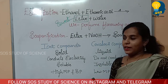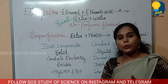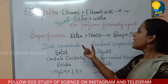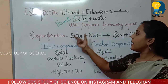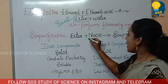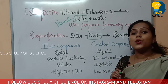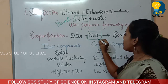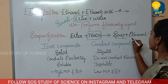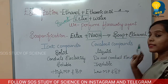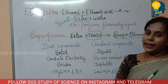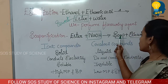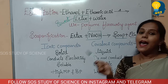The next note is saponification. How do you define saponification? Very simple. Ester reacts with NaOH — sodium hydroxide — which is a base. The products are soap plus ethanol. So ester combines with base and it gives soap and ethanol.